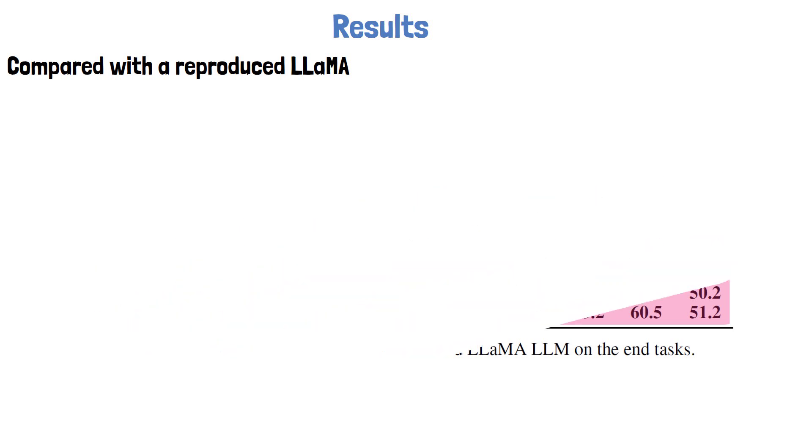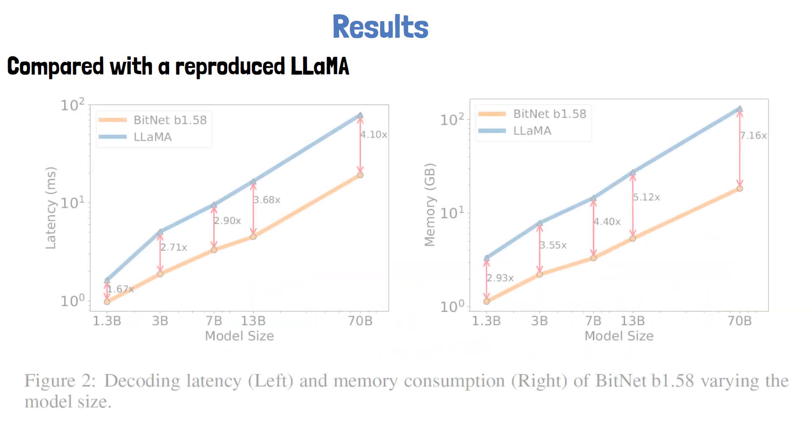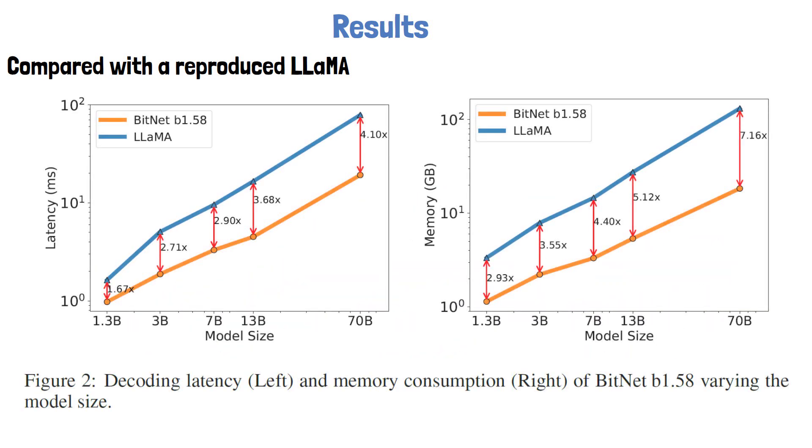The researchers also trained large versions of the model, and in the following chart from the paper we can see the trend of latency and memory, which shows that as the models scale up, the cost reduction also increases. For example, the latency improvement in the 3 billion version is 2.7, while for the 70 billion version it is already 4.1 times faster.